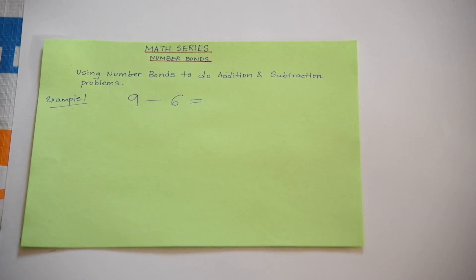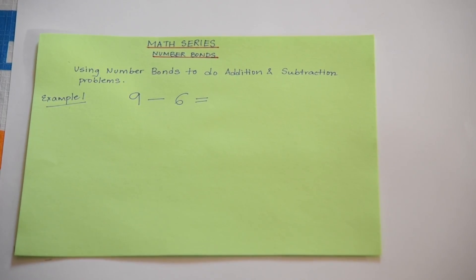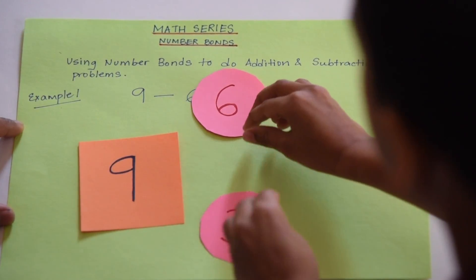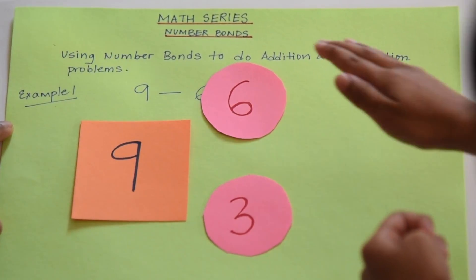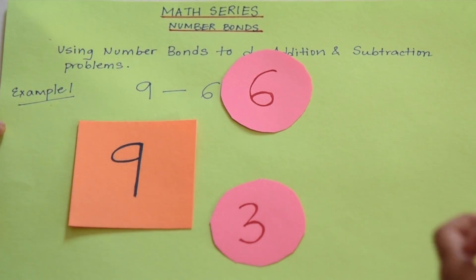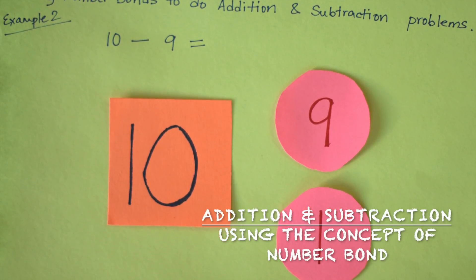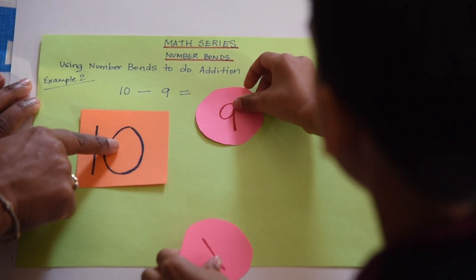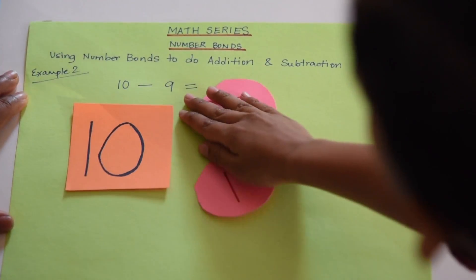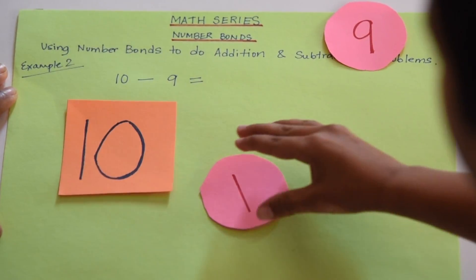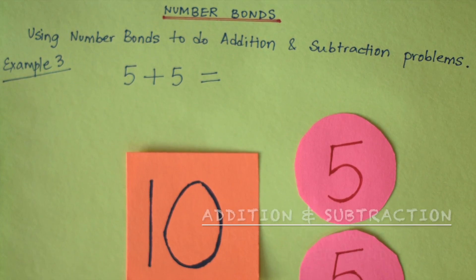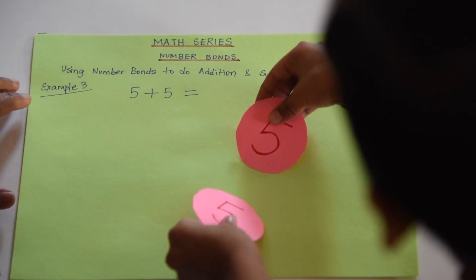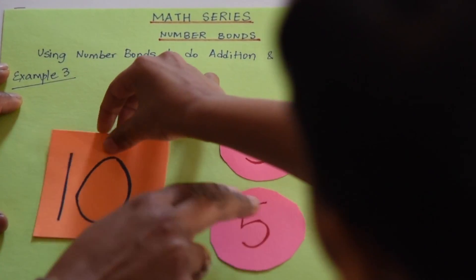Now we are going to be doing addition and subtraction problems using number bonds. Ishaan, what is 9 minus 6? 3. Can you explain using number bonds? 9 is made up of 6 and 3. So the answer is 3. And what is 5 plus 5? 10. Can you explain using number bonds? 5 and 5 is the number bond of 10. Great job.